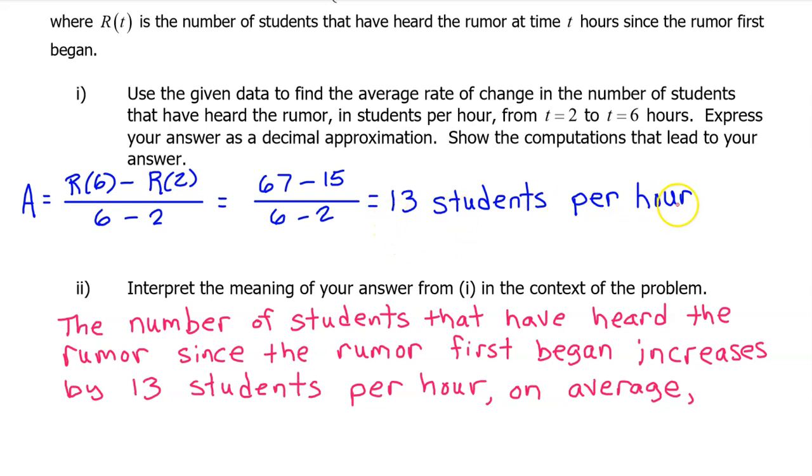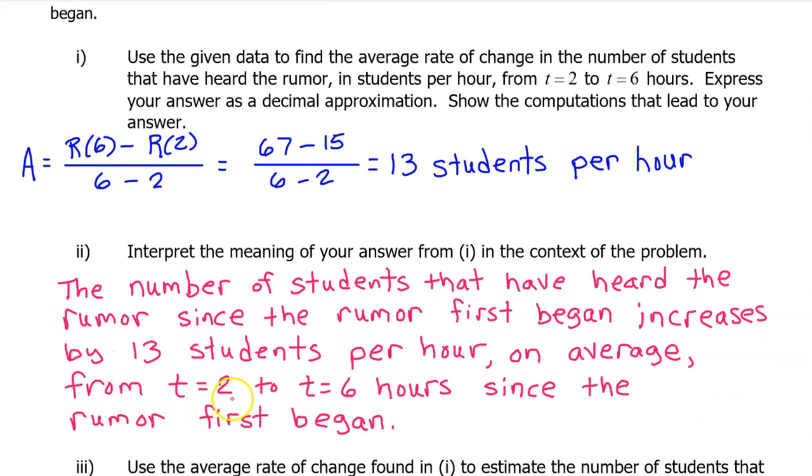And here comes the average rate of change: increases by 13 students per hour on average. But if I stop here, I'm not getting the point. You have to include one more thing. From t equals 2 to t equals 6 hours since the rumor first began. You must include the interval used to calculate the average rate of change in order to get credit. And you must include the units. In my opinion, this is the best way to express the meaning of the average rate of change in the context of the problem. But I'm going to give you one more option.